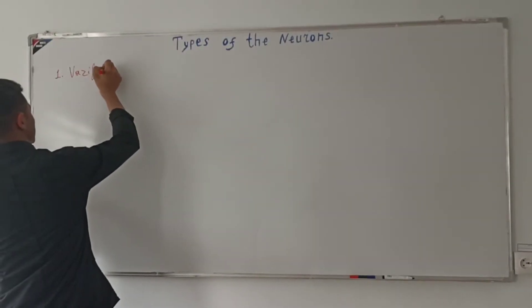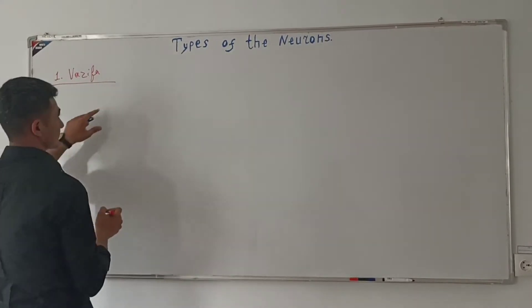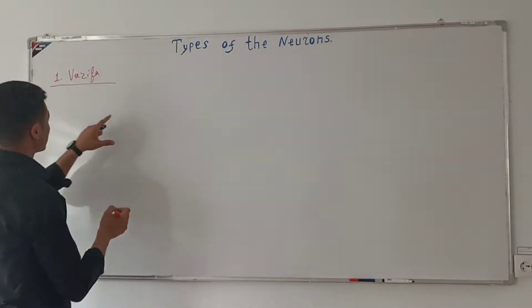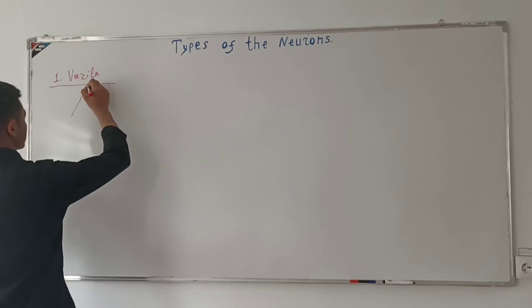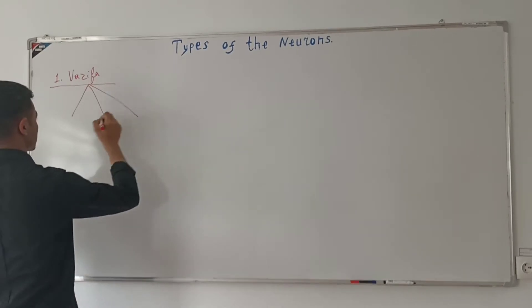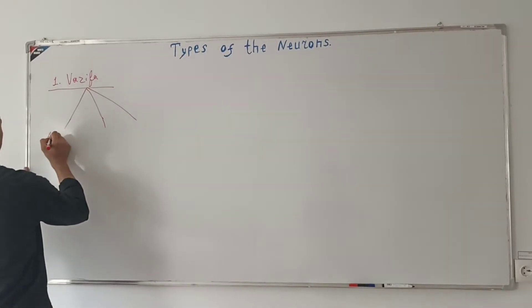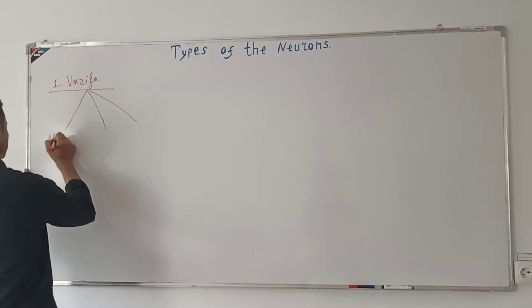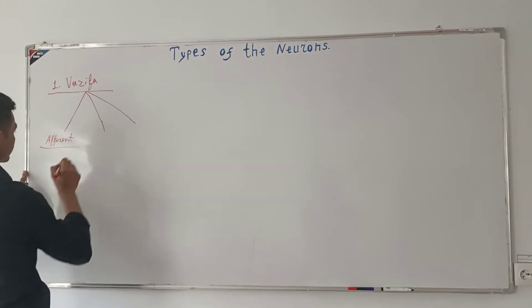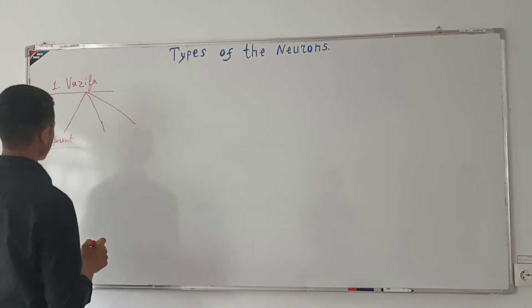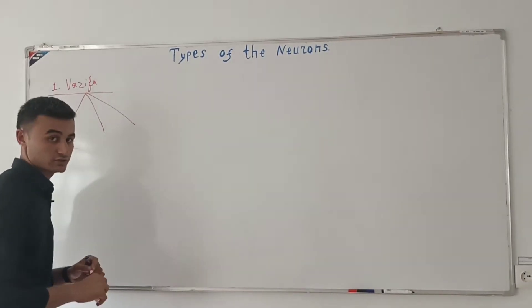Vazifasiga ko'ra neyronlar uch xil bo'ladi. Birinchisi — afferent neyronlar. Afferent neyronlar markazga intiluvi neyronlar deb ataladi.